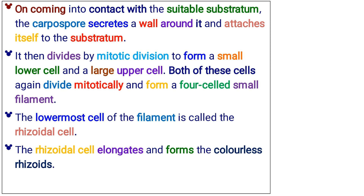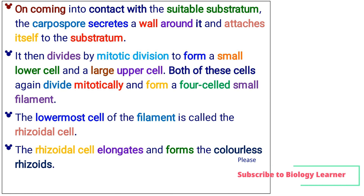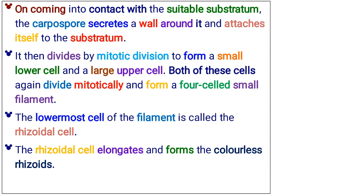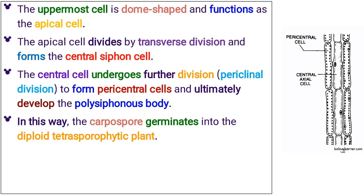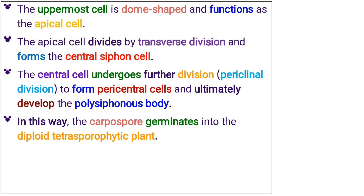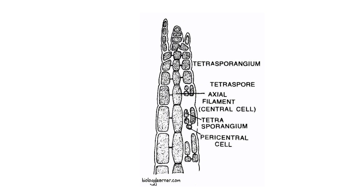On coming into contact with a suitable substratum, the carpospore secretes a wall around it and attaches itself to the substratum. It then divides by mitotic division to form a small lower cell and a large upper cell. Both cells again divide mitotically and form a four-celled small filament. The lowermost cell is called the rhizoidal cell, which elongates and forms colorless rhizoids. The uppermost cell is dome-shaped and functions as the apical cell. The apical cell divides by transverse division and forms the central siphon cell, which undergoes further periclinal division to form pericentral cells and ultimately develop the polysiphonous body. Thus, the carpospore germinates into the diploid tetrasporophytic plant.